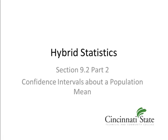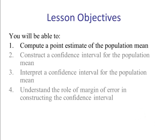Section 9.2 Part 2: Confidence Intervals About a Population Mean. Lesson objective: Compute a point estimate of the population mean.